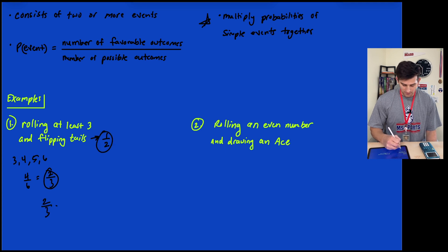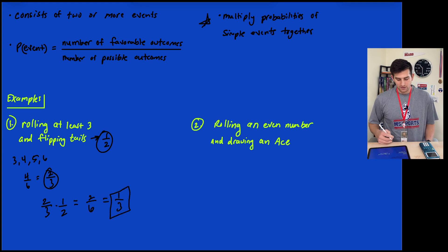2/3 times 1/2 equals 2/6, which simplifies to 1/3. So the probability of rolling at least a 3 and flipping tails is 1/3, which is about 33% or 0.3 repeating as a decimal.